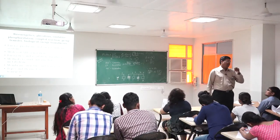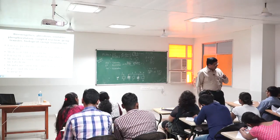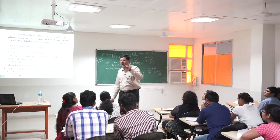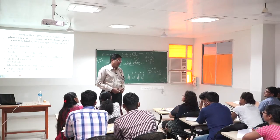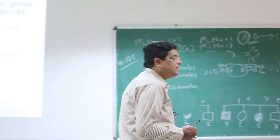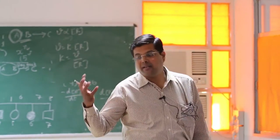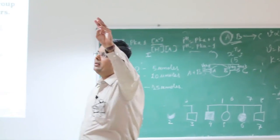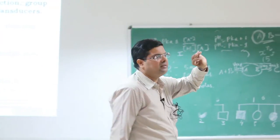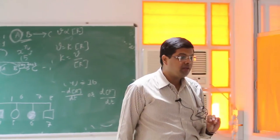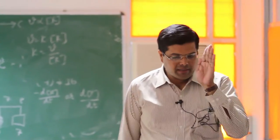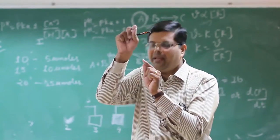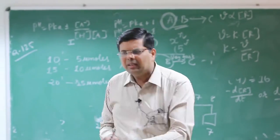Cytochrome BC1 complex is also present during photophosphorylation. It serves the same purpose as complex 3 in the electron transport chain. The three sites in the electron transport chain where free energy is released and trapped as ATP are: one, from complex 1 to ubiquinol; two, in complex 3; and three, in complex 4. These are the three sites of ATP synthesis.